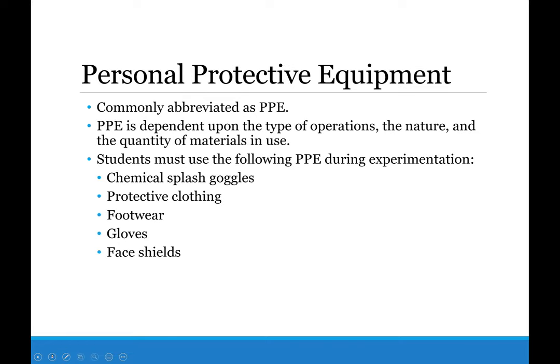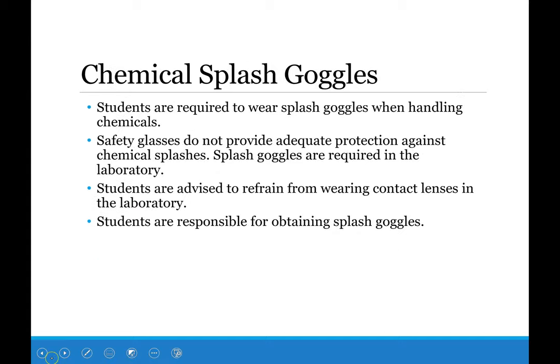PPE — personal protective equipment — is what we wear to prevent ourselves from getting hurt. Chemical splash goggles are the typical large laboratory goggles that prevent splashes when working with chemicals. Safety glasses are not allowed in the lab because they don't adequately protect against splashes and spills. You are responsible for getting your own safety goggles; we cannot provide them this semester due to potential COVID-19 cross-contamination, but you can get them cheaply at Home Depot or Lowe's for less than $5.